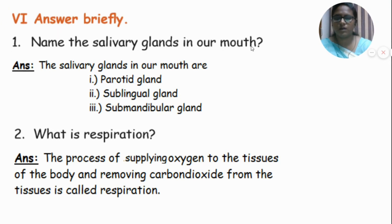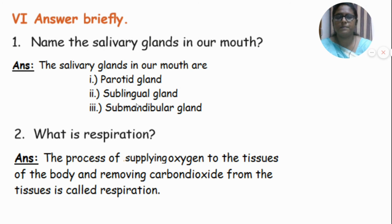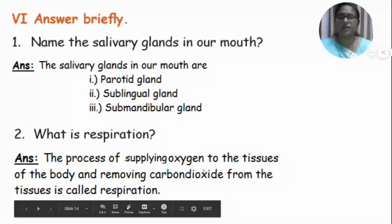Now let's move on to answer briefly. Name the salivary glands in our mouth. The salivary glands in our mouth are: parotid gland, sublingual gland, and submandibular gland. What is respiration? The process of supplying oxygen to the tissues of the body and removing carbon dioxide from the tissues is called respiration.